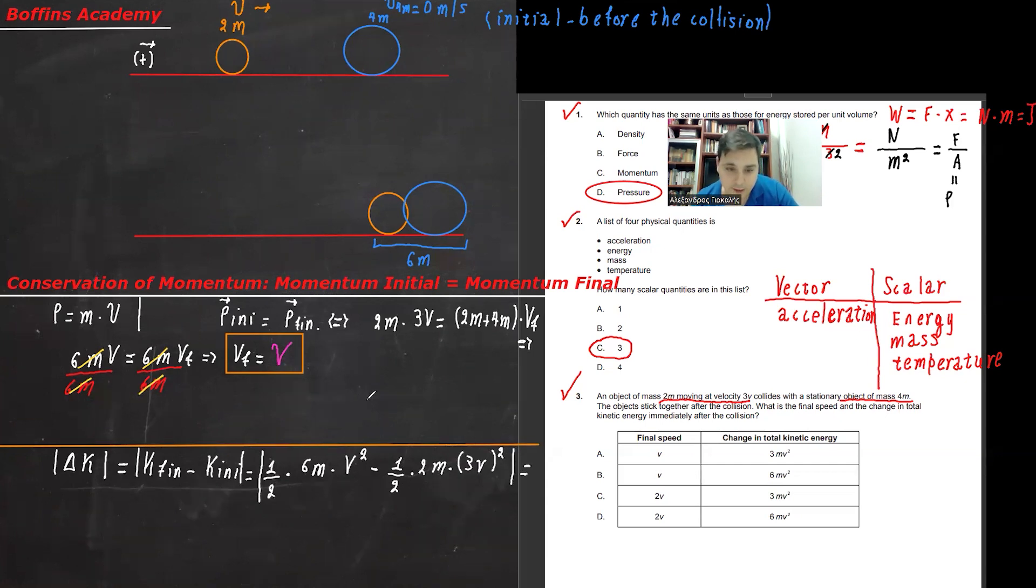Don't forget the absolute value. The 2m's will be simplified. Here we have 3. So basically, it's going to be absolute value of 3mv squared minus 9mv squared. This is absolute value of minus 6mv squared, which will give us 6mv squared.